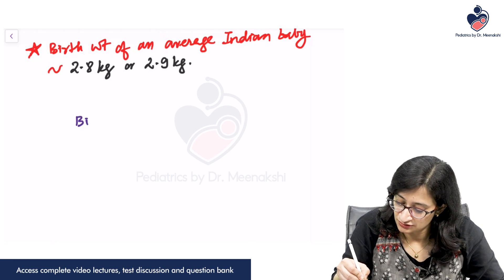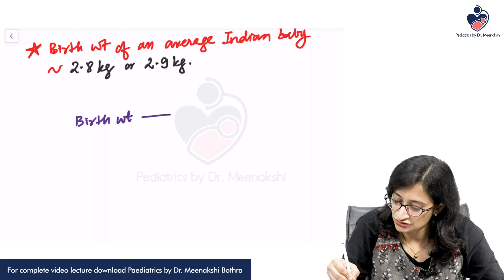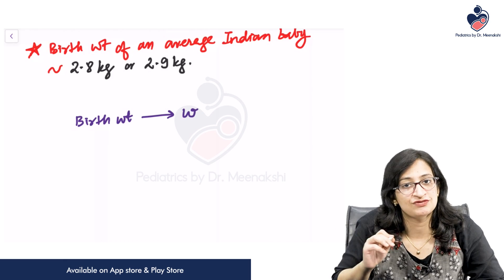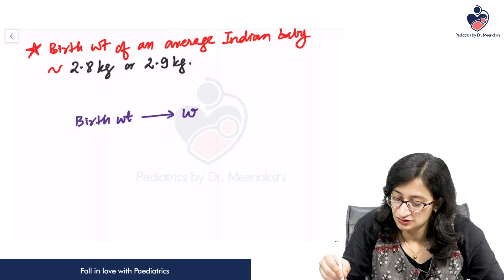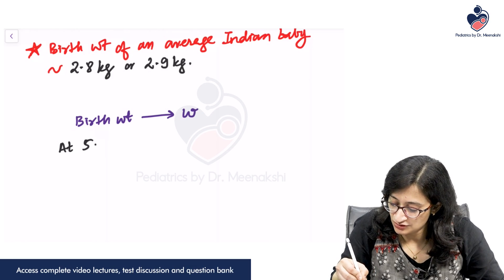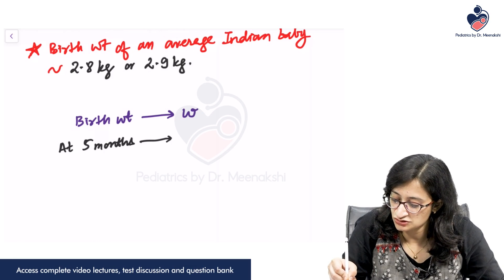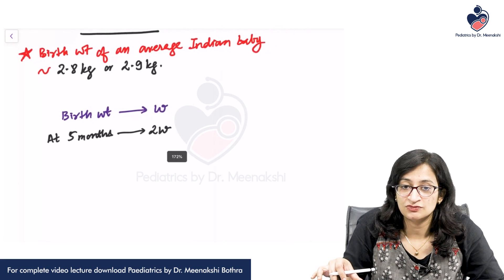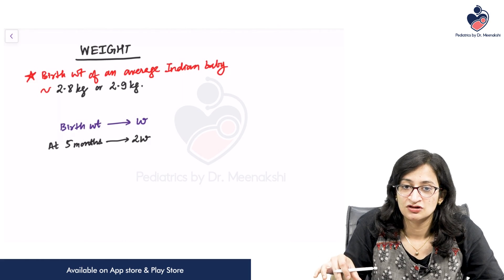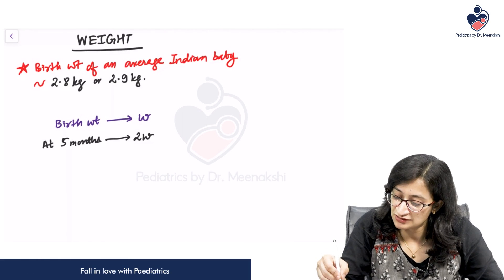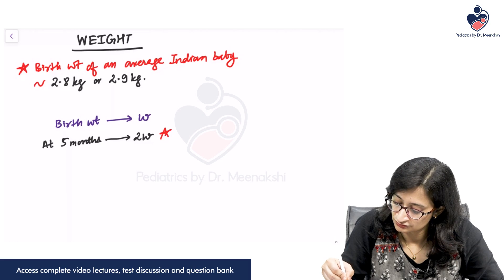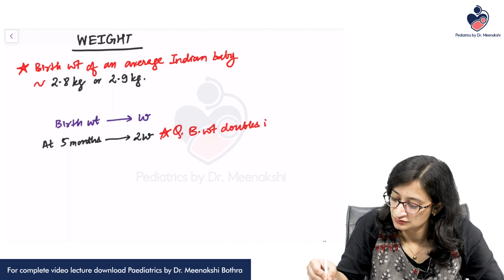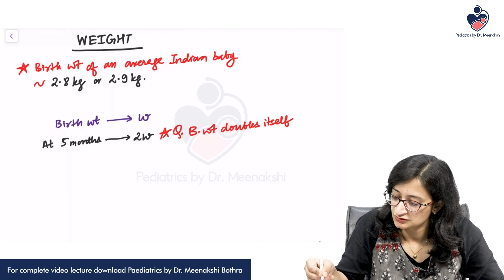Suppose the birth weight of a child is W — whatever his birth weight is, 2 kgs, 3 kgs, 1.5 kgs, anything. At around 5 months of age, his weight will become 2W. So the question is: when does the birth weight double itself? The birth weight doubles itself at around 5 months of age — birth weight doubles in 5 months.